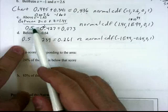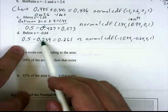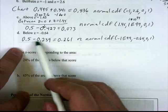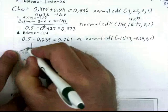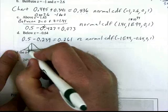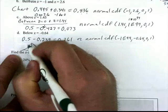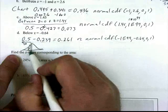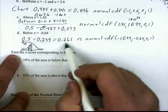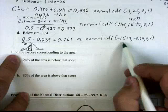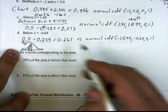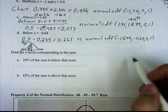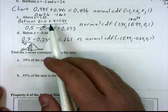For the area below Z equals negative 0.64: we find the area between Z equals 0 and Z equals 0.64, which is 0.239. Since we want below, we take 0.5 minus 0.239, giving 0.261. Using the calculator with normalcdf, we go from negative infinity (negative 1E99) to negative 0.64, with mean 0 and standard deviation 1.